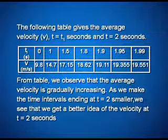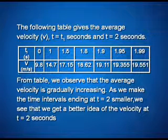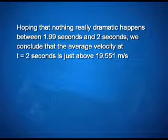From the table, we observe that the average velocity is gradually increasing. As we make the time intervals ending at t = 2 smaller, we get a better idea of the velocity at t = 2 seconds. Hoping that nothing really dramatic happens between 1.99 seconds and 2 seconds, we conclude that the average velocity at t = 2 seconds is just above 19.551 meters per second.